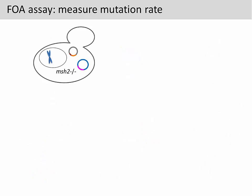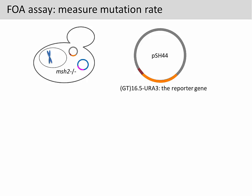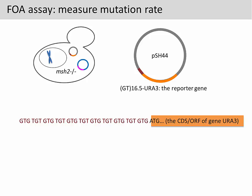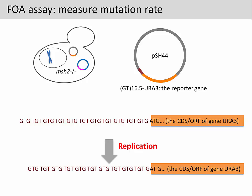The yeast strain used in this experiment also carries a reporter plasmid called PSH44. The reporter gene is the gene URA3 fused to a simple repetitive sequence called GT16.5. This is also called a microsatellite sequence. GT16.5 is the sequence GT repeated 16.5 times and then fused to the open reading frame of the gene URA3. ATG is the start codon for URA3.